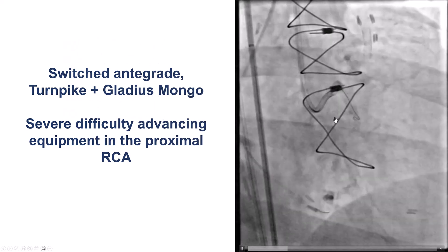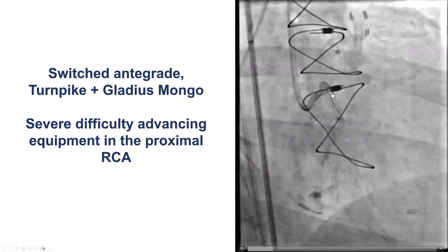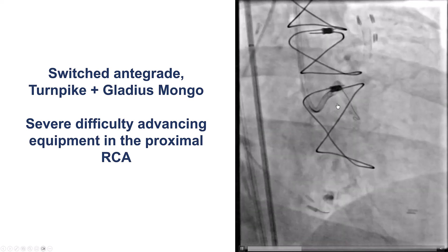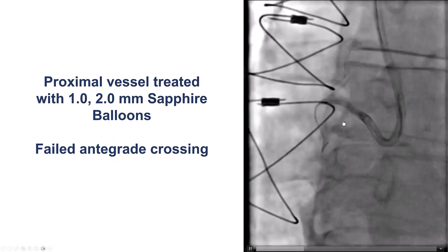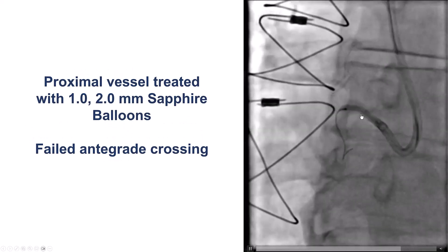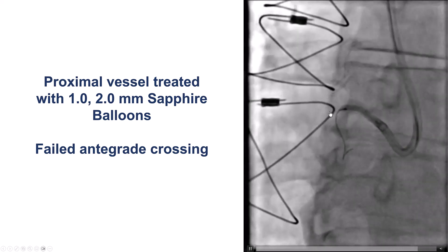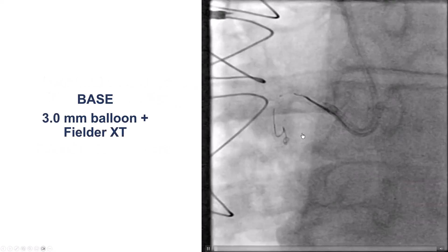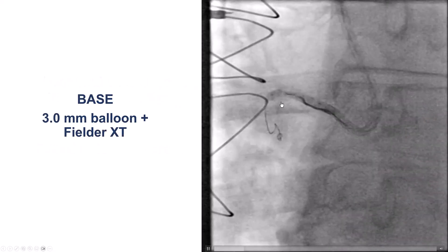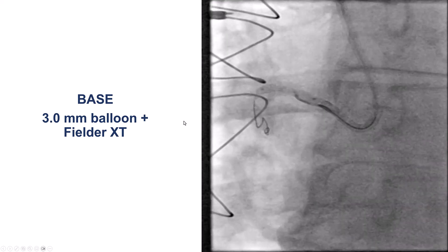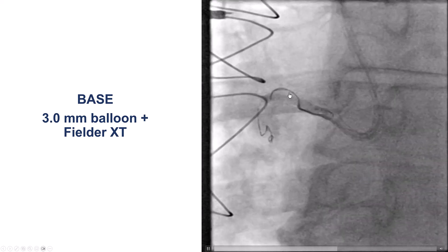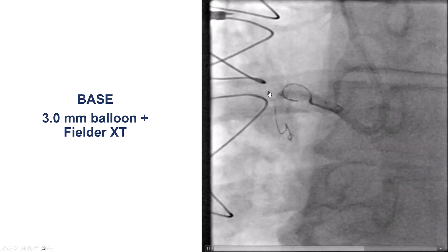We then switched to antegrade. The plan was to knuckle given the extensive calcification, but we had a lot of difficulty advancing equipment down the right coronary artery. We used a small balloon to create more entry into the vessel, but then had difficulty advancing guide wires. We eventually used the BASE technique with a 3.0 mm balloon and a Fielder XT guide wire in order to gain access to the extraplaque space.